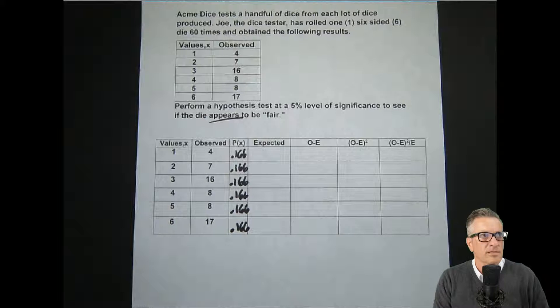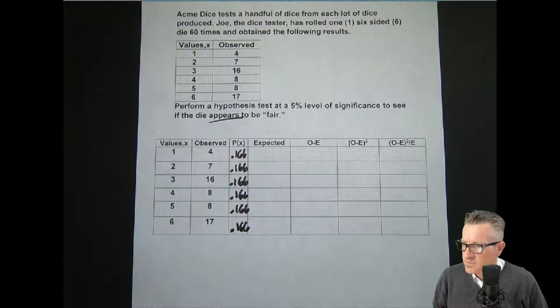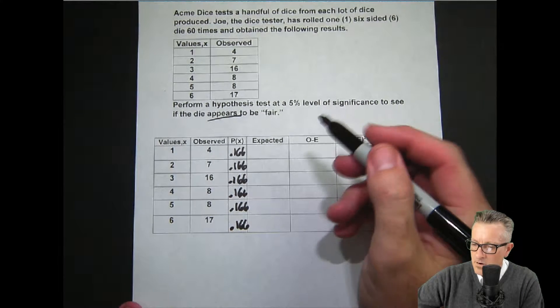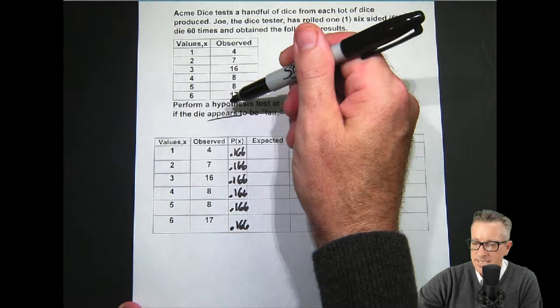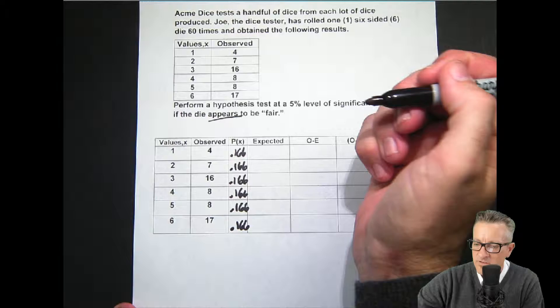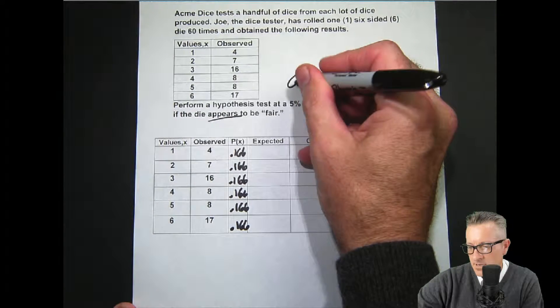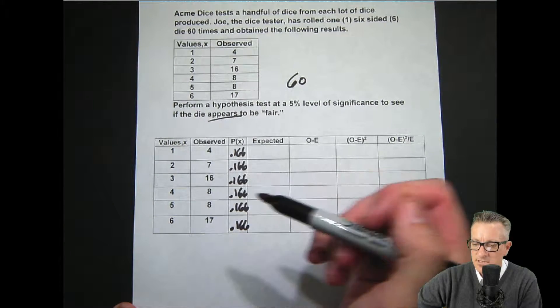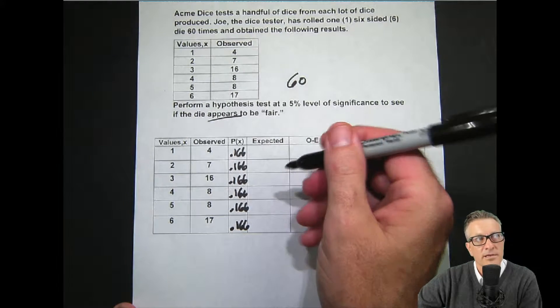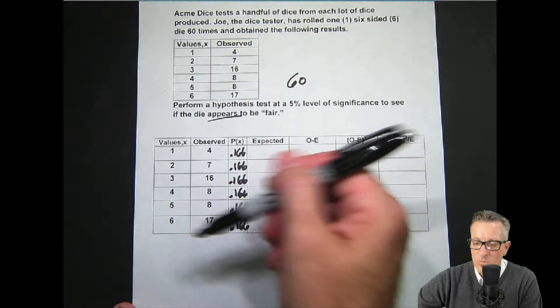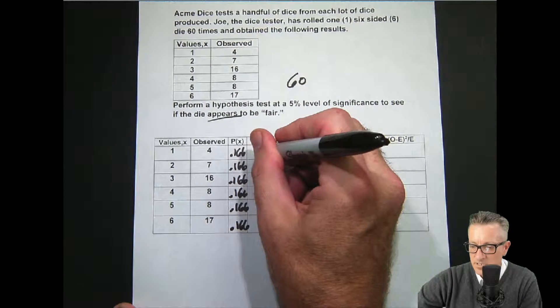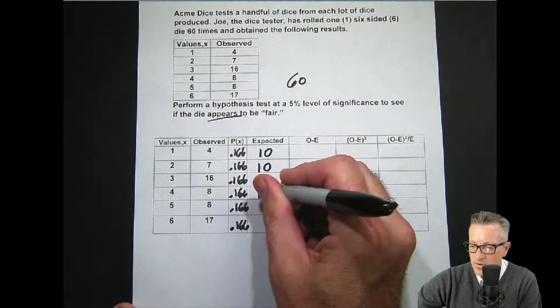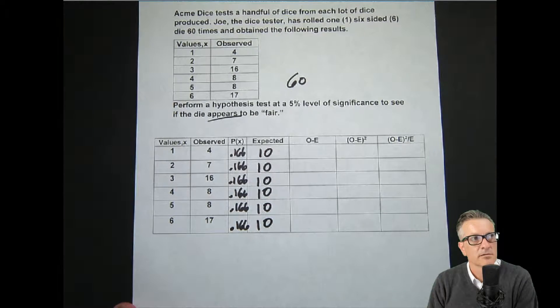The next thing is the expected, and this is why this is easy as well. Our total rolls or tests that we had, total of the observed is 60. And when we divide that up and spread that out, multiply 60 by 0.166, we end up getting for expected, which is what we expect to get with a fair die. A really nice, easy number. Sometimes expected is not a round number. We get 10 for each one. It's a nice problem.